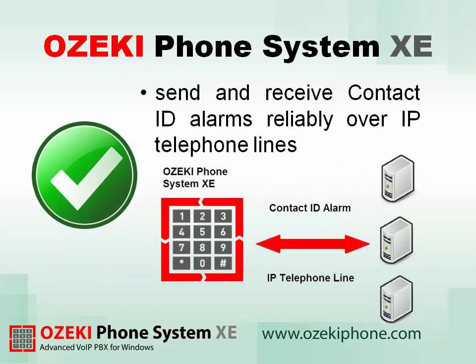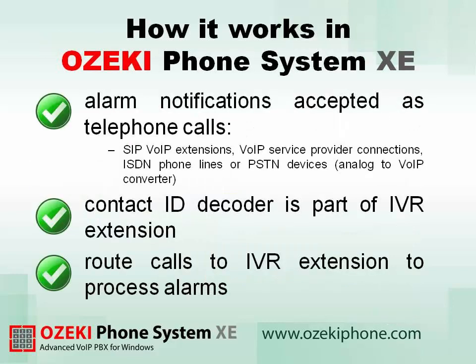The Ozeki solution is included in the Ozeki Phone System XZ. Ozeki Phone System XZ can receive and send Contact ID alarms reliably over IP telephone lines. The alarm notifications are accepted as telephone calls that can come in through SIP VoIP extensions, VoIP service provider connections, ISDN phone lines, or PSTN devices which convert analog phone calls to VoIP. The Contact ID decoder in Ozeki Phone System XZ is part of the IVR extension.